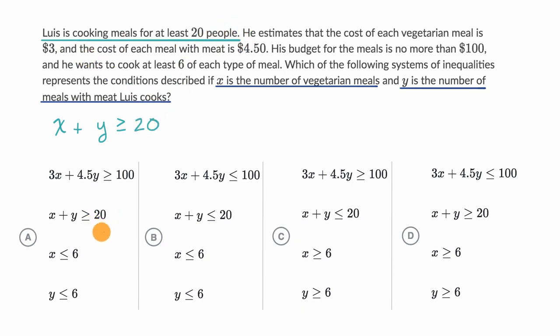If I wasn't doing this as a multiple choice, I would just keep adding more constraints here, but they give us some choices. We can see that X plus Y is greater than or equal to 20. That's in choice A. It's actually not in choice B, so we can already rule out choice B. They have less than or equal to 20 here. Same thing for choice C, so we can rule that out. And then choice D does have that, so we are still in the running.